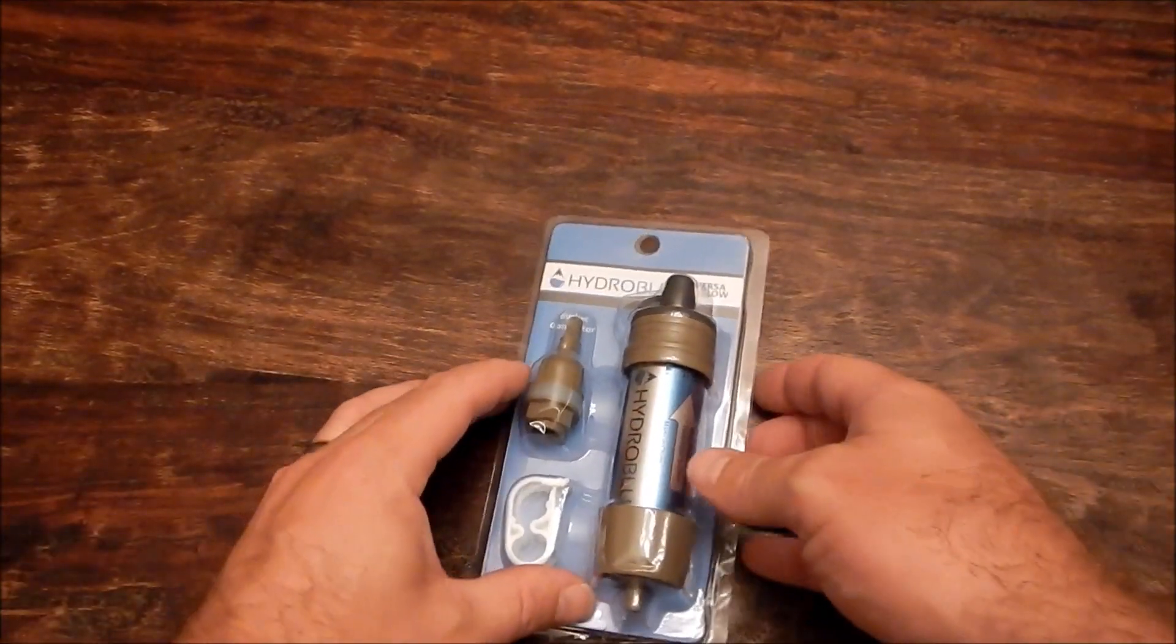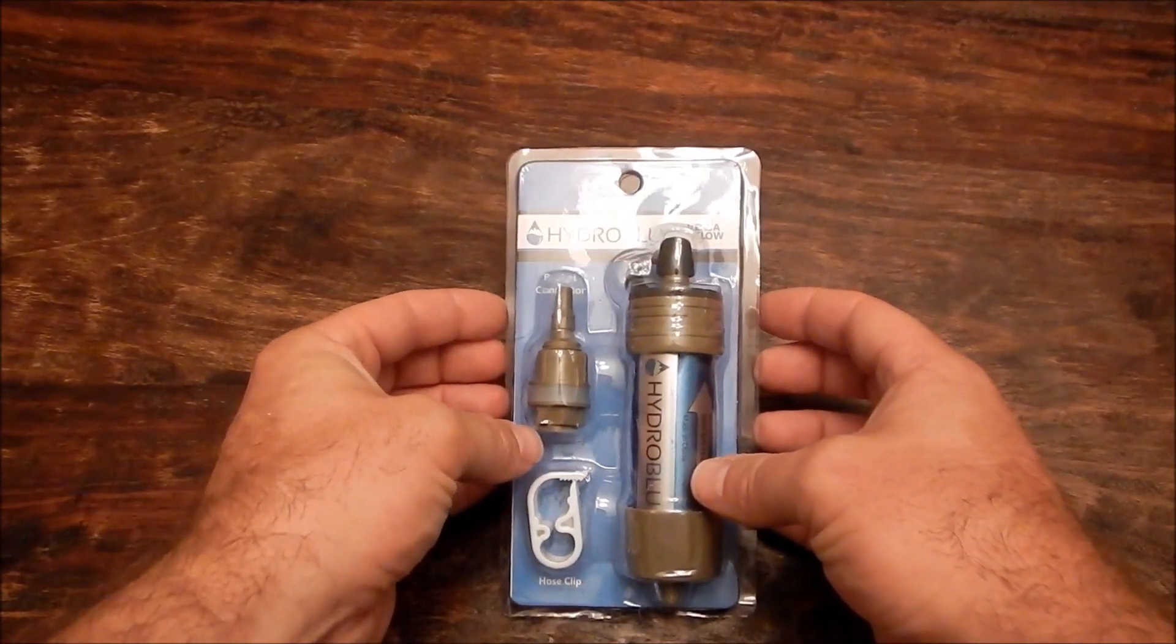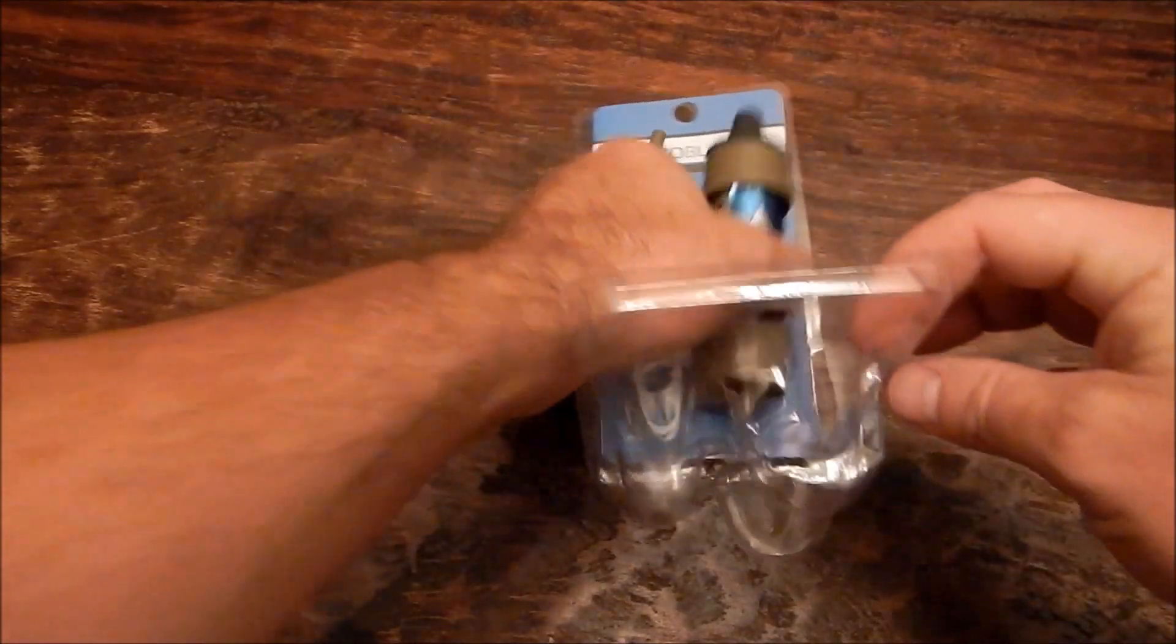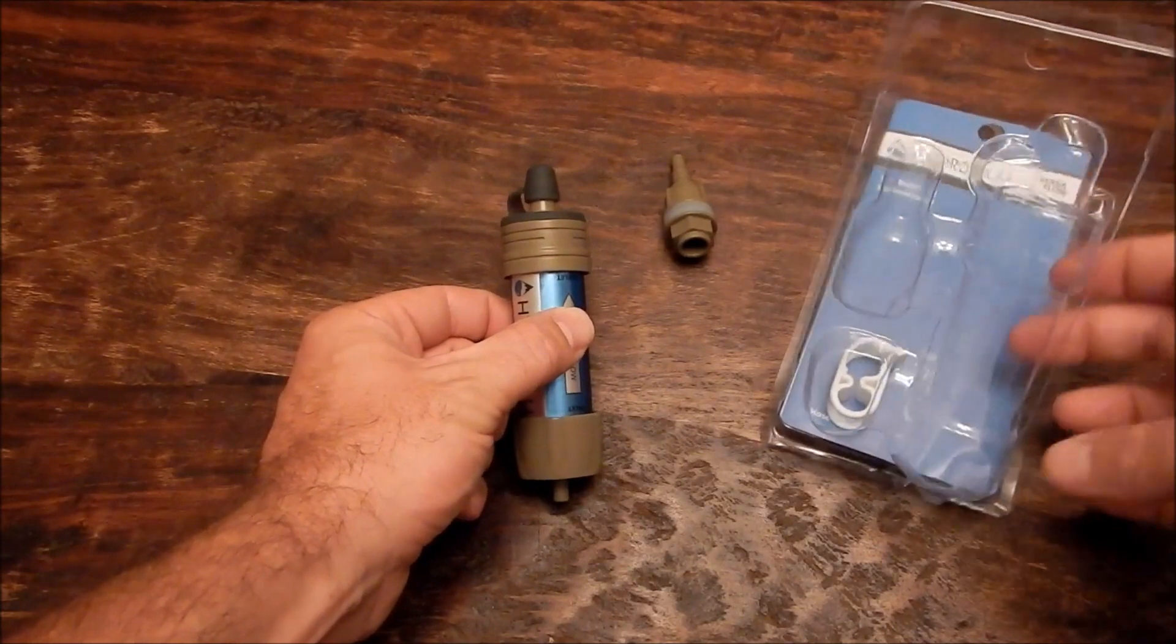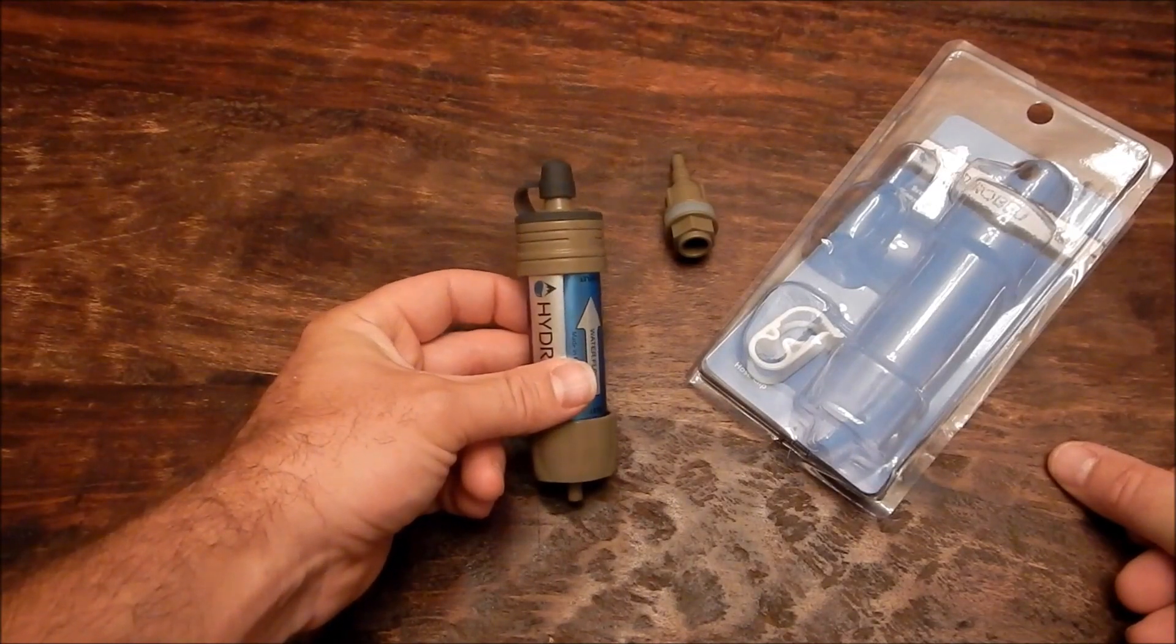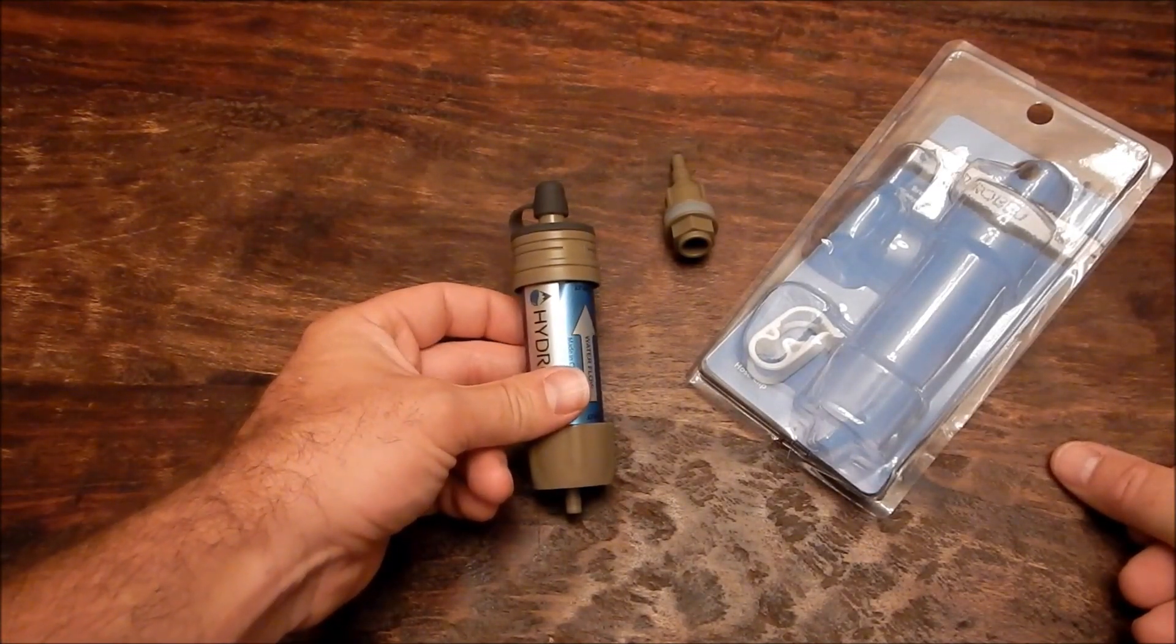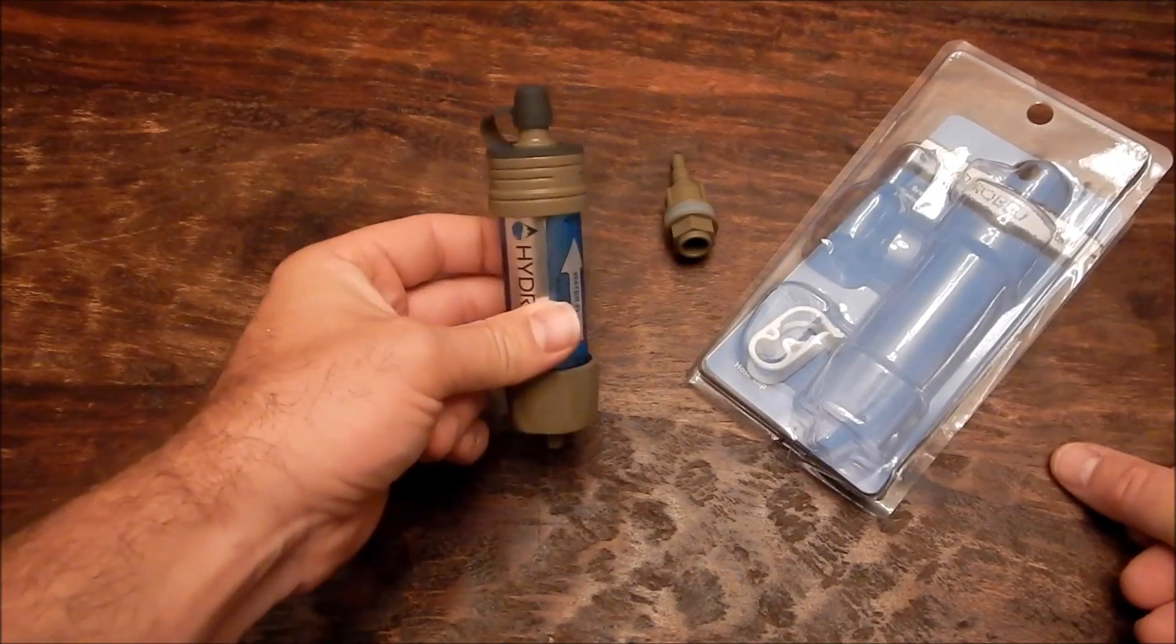Here are the contents of the hydro blue Versaflow water filter. Very simple. So here's the water filter itself. It's slightly larger than a Sawyer Mini and the expected flow rate is 600 milliliters per minute, which is quite a good flow rate.